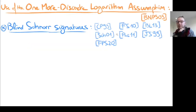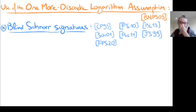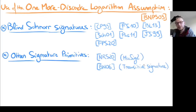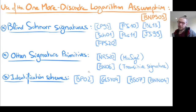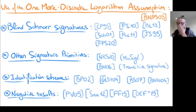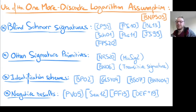The one more discrete logarithm assumption is very used in the literature. For example, the Schnorr signature unforgeability relies on the one more discrete logarithm assumption. There are also other signature primitives, such as multi-signatures and threshold signatures based on the Schnorr identification protocol, as well as some identification schemes. There are also negative results — proofs that there is no reduction for some signature schemes; you cannot reduce the unforgeability property to only discrete log, so you need to suppose that one more discrete log is hard.